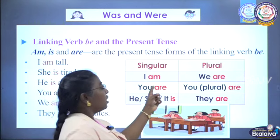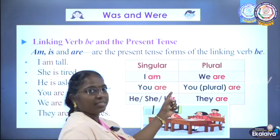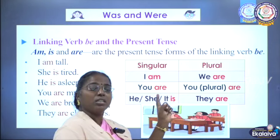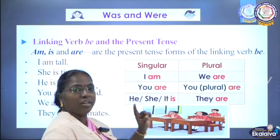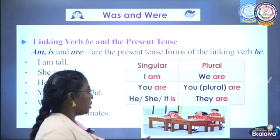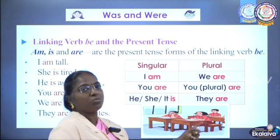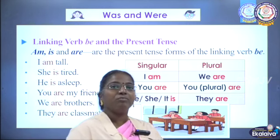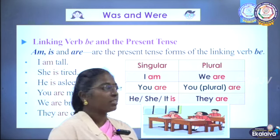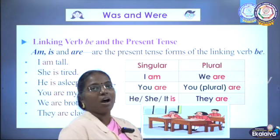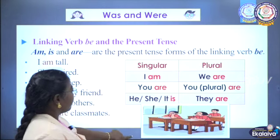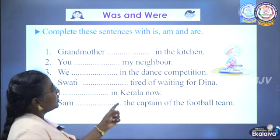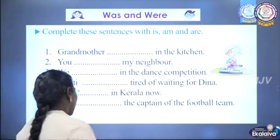For singular: I plus linking verb am. You — we use only are, not is. He, she, it — we use is. And for plural: we are, they are, and you are. Now complete these sentences with is, am, or are.